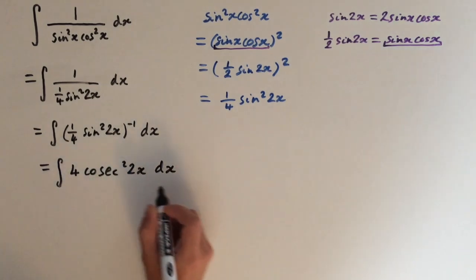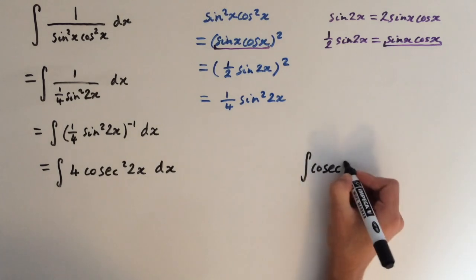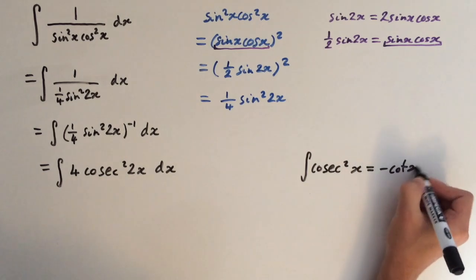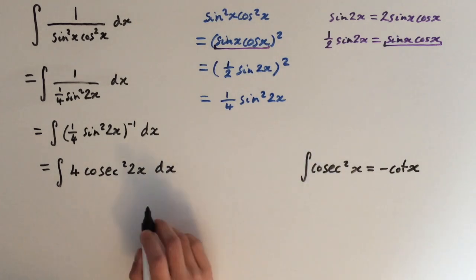And now we can integrate this. So the integral of cosec squared x equals minus cot of x. So integral of 4 cosec squared will be minus 4 cot of x.